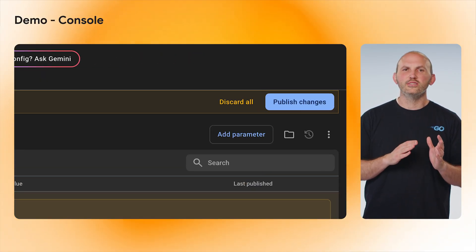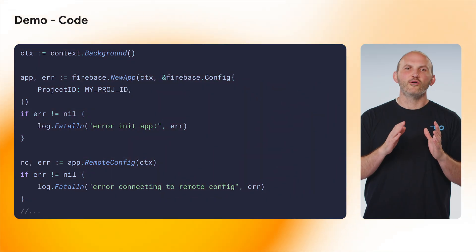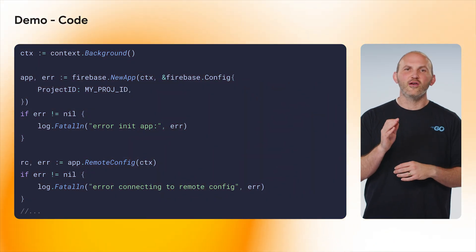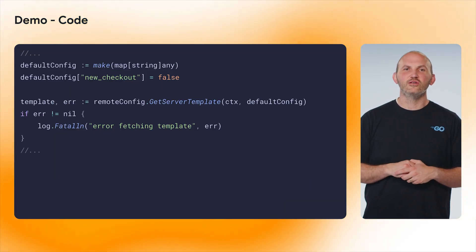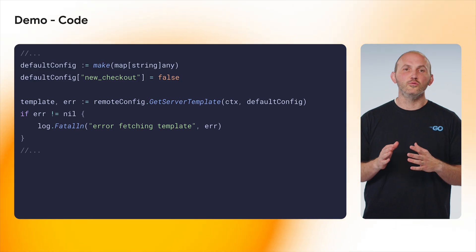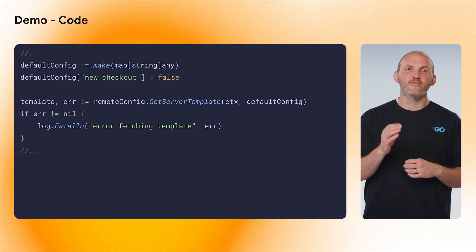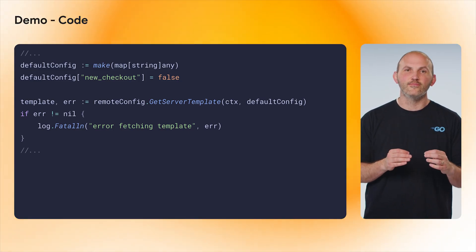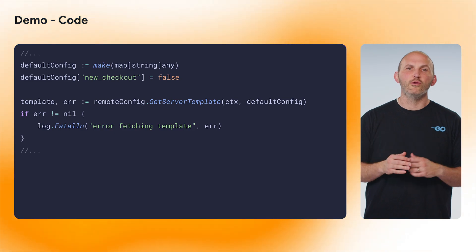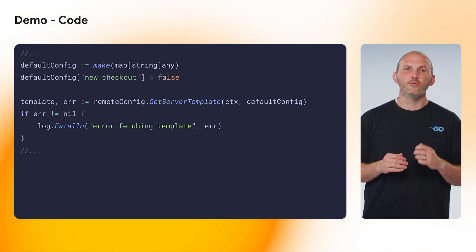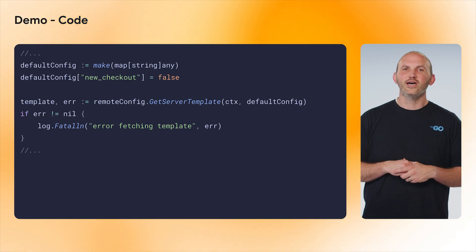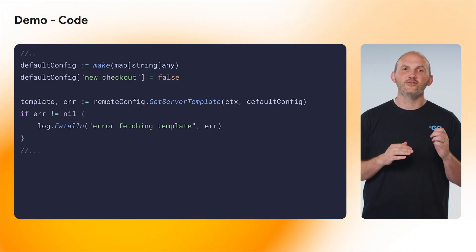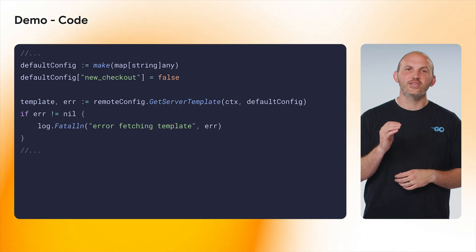Let's move on to wiring this up in our Golang server. We start by going to our Go server and initializing Firebase in our Remote Config service. Once this is done, we set a default configuration with some values that we want to be used in case our configuration on the Firebase servers cannot be reached. We reused the New Checkout parameter that we use in the Remote Configuration New Parameters screen. We can then pass that into GetServerTemplate, which loads our server-side template.